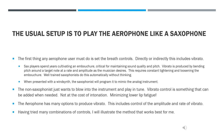Sax players spend years cultivating an embouchure crucial for maintaining sound quality and pitch. They produce vibrato by bending pitch around the target note at a desired rate and amplitude through constant tightening and loosening of the embouchure. Well-trained saxophonists do this automatically without thinking.